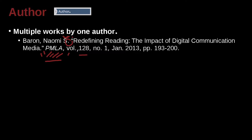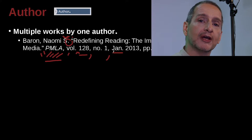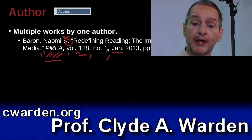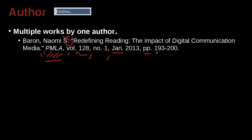Then we have the volume number, one space in between, comma, 'no.' for number, period, space, number one, comma, space, and then 'January 2013,' pages 193 to 200. Now we don't always have this month, but if the journal does use that approach, you go ahead and put it in. If they don't use it, then you don't. MLA is very clear about this — you try to give the information that helps the reader find what they're looking for. The year is right in there with 'pp' meaning pages. If it's just one page, it's just one 'p'; if it's two or more pages, it's two 'p's.